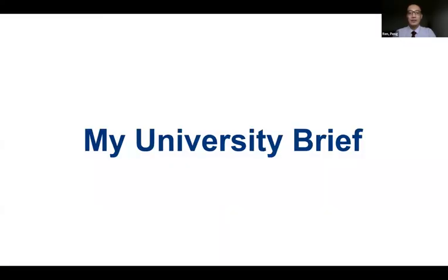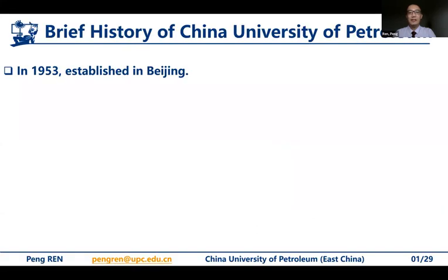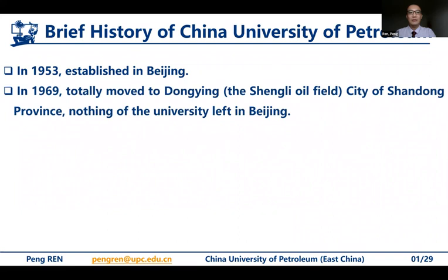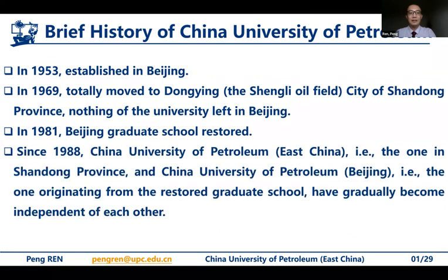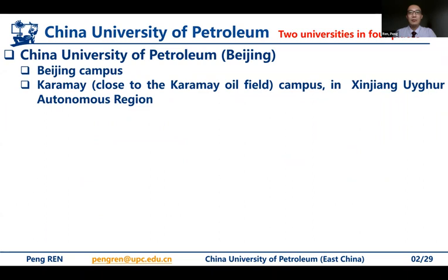Let me briefly talk about my university. China University of Petroleum was established in 1953 in Beijing. It then moved to Dongying in 1969. Dongying has the Shengli oil field and it is a city of Shandong province. In 1988, the Beijing graduate school was restored. Since 1988, China University of Petroleum East China, that is the one in Shandong province, and the China University of Petroleum Beijing have gradually become independent universities. Currently in China, there are two universities in four places sharing the name of China University of Petroleum.